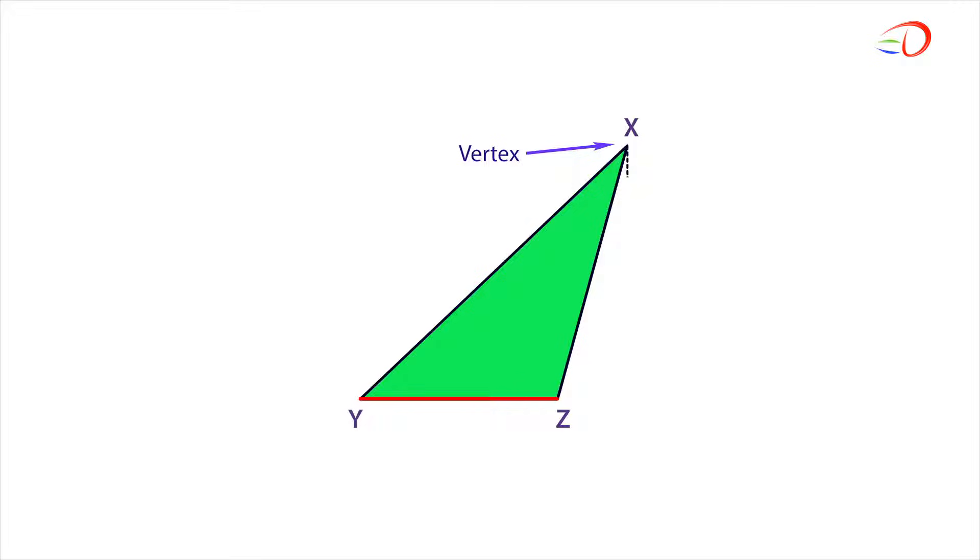From vertex X, draw a line to the base. It doesn't meet the base YZ. What should we do? Extend a line from the base YZ. Now, draw a perpendicular line from vertex X to the extended line to form a right angle. So when YZ is the base, this is the height.